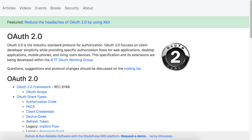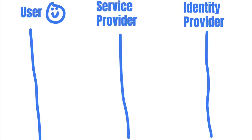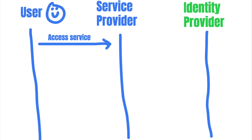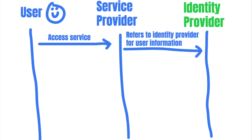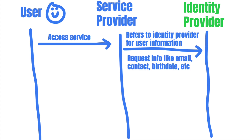OAuth facilitates SSO by managing credentials in one single place. Within an OAuth system, the only place that stores the user's credentials is the identity provider. When you log into an application using OAuth, the service provider requests access to resources from the identity provider. These resources might include your email address, contacts, birthdate, and anything else that's needed to log you in. This is called a scope.